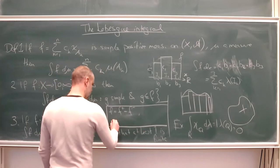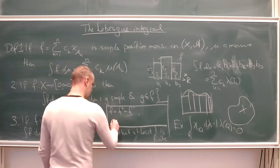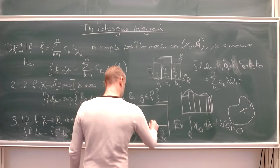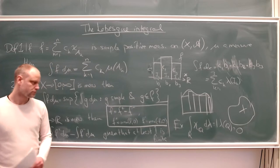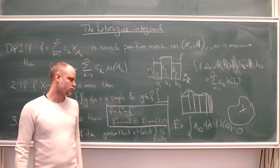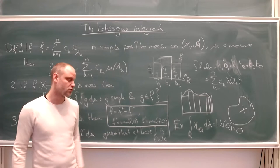The positive part is f-plus = max(f, 0), and f-minus = max(-f, 0). By the second theorem of last lecture, if f is measurable, then f-plus and f-minus are both measurable functions.